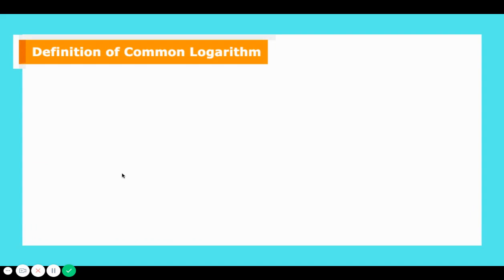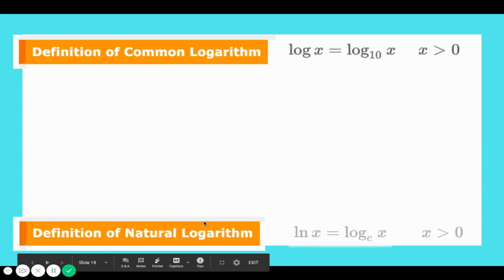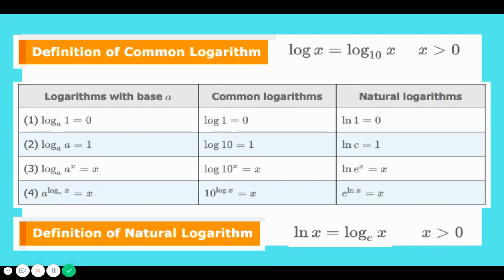There is something called a common logarithm. Since we count in groups of ten, when we say log base 10 of x, we often don't write the base — we just write log x. Whenever you don't see a number, there's a secret 10 there, and this holds as long as x is greater than zero. There's also the natural logarithm: when the base is e, we write ln x. A chart summarizes all these properties for common logs and natural logs.